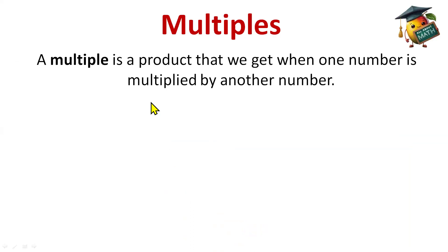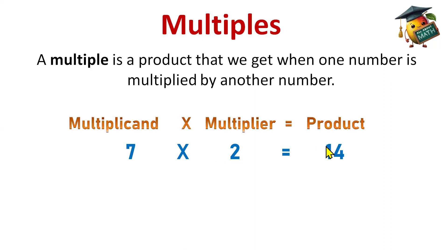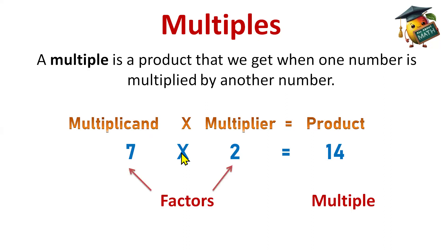Now, multiples. A multiple is a product that we get when one number is multiplied by another number. So the multiple is the product — the answer we get. When we multiply two numbers, those numbers are the factors, and when we get the answer — the product — that is a multiple. For example: 7 × 2 = 14. Here 7 is the multiplicand, 2 is the multiplier, and 14 is the product. So 7 and 2 are the factors, and 14 — the product — is the multiple.